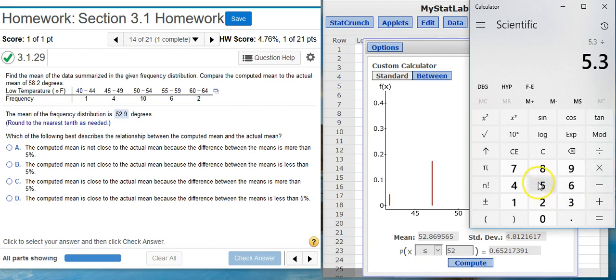This is 5.3. Divide by the actual, 58.2. Multiply by 100. As you can see, we're at 9.1%, which is greater than that 5% threshold.